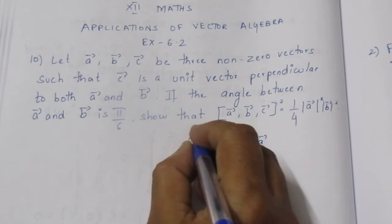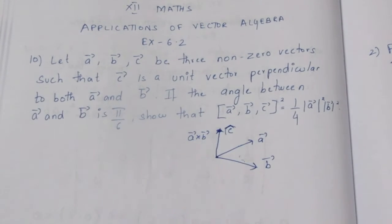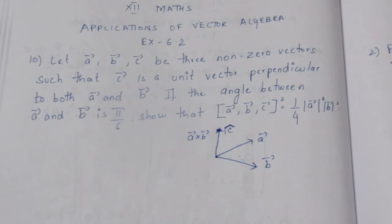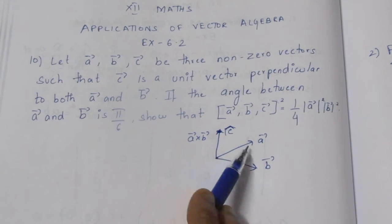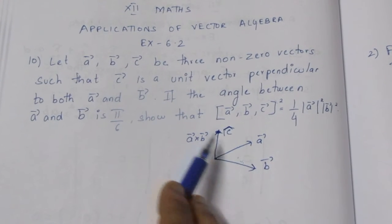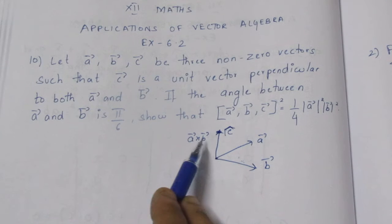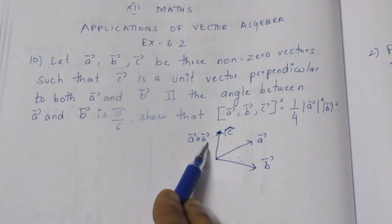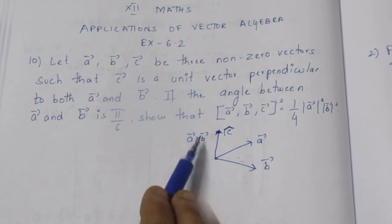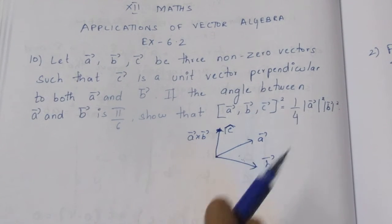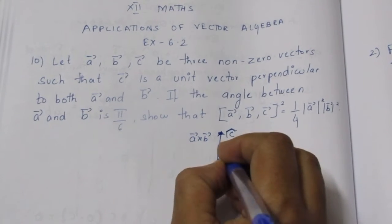c vector is perpendicular to both a and b, which means a vector cross b vector gives the direction perpendicular to both. The cross product of a vector and b vector has two parts, and the angle between a and b is π/6.